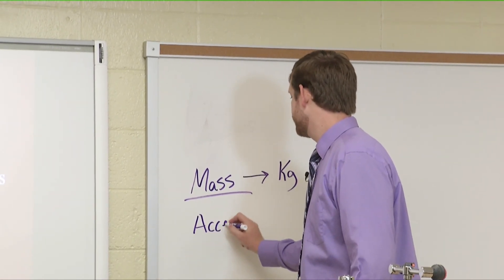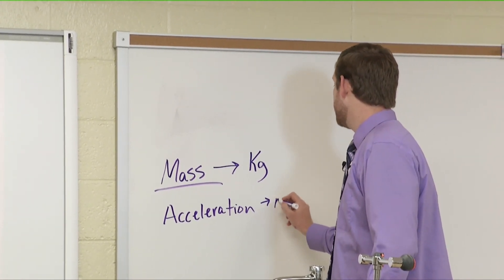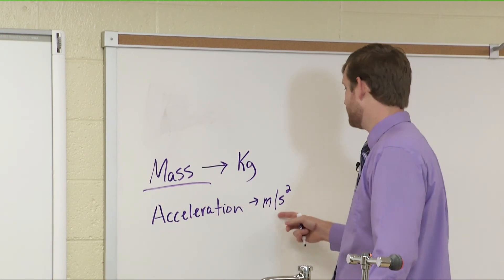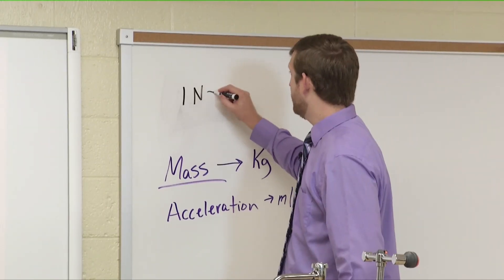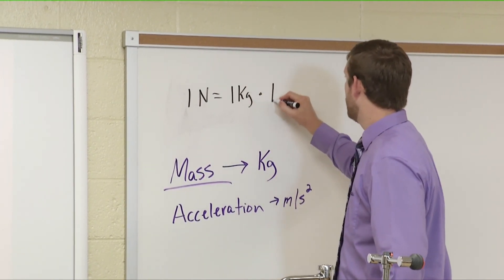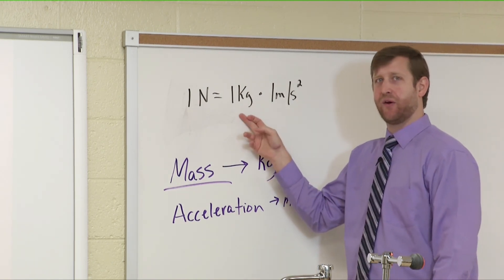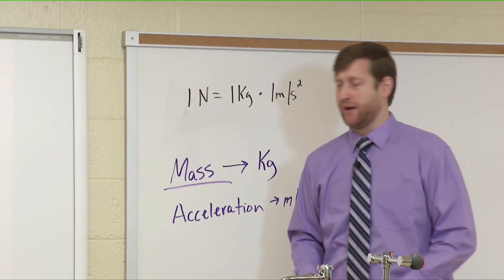Acceleration, which we should remember from last week, is measured in meters per second squared — the same as meters per second per second. One newton is equal to the force required to accelerate one kilogram at one meter per second squared. So one newton equals one kilogram times one meter per second squared. Any time you multiply kilograms and meters per second squared together, they equal a newton.